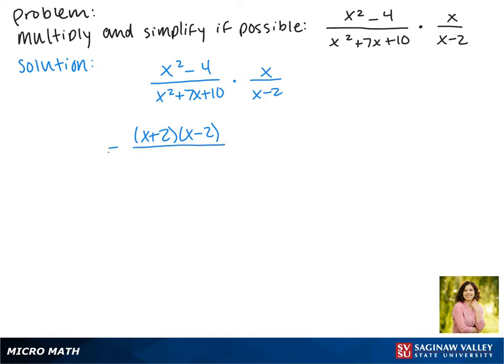Now in the denominator, the factors of 10 that make 7 are positive 5 and positive 2. In our other fraction, neither of these can be factored.